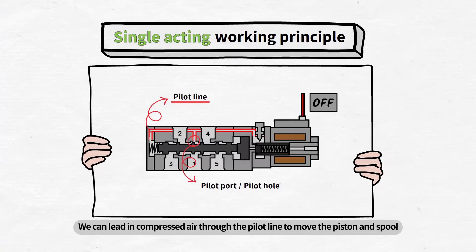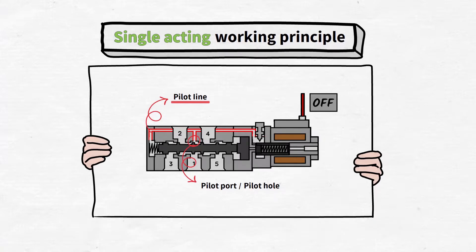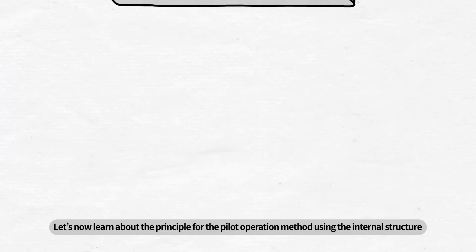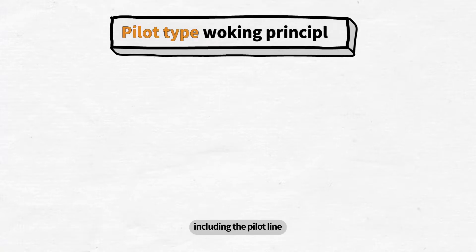We can lead in compressed air through the pilot line to move the piston and spool. Let's now learn about the principle for the pilot operation method using the internal structure including the pilot line.